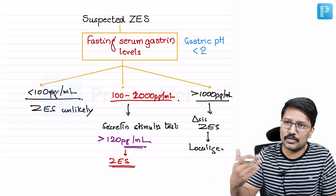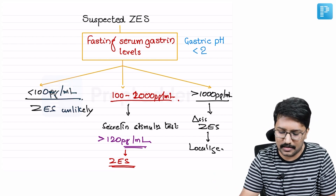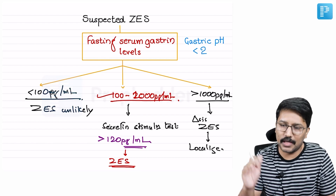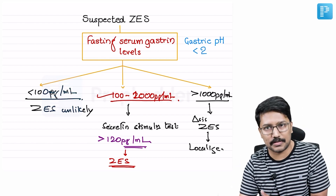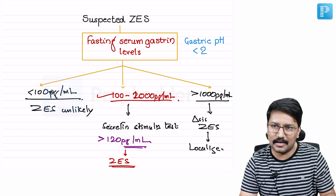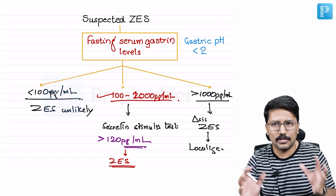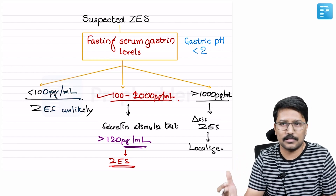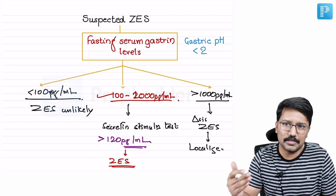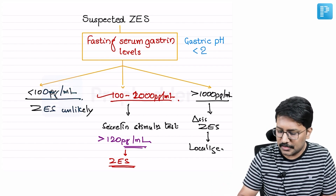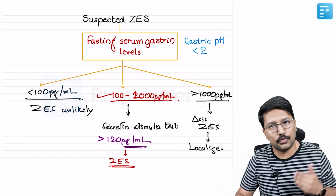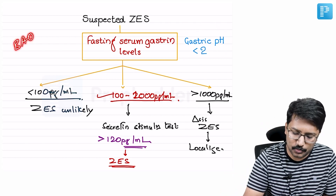Remember, whenever you have strong suspicion because of other features — for example, someone presenting with diarrhea, refractory peptic ulcers, or a known MEN 1 patient — and the suspicion is quite strong, but the gastrin levels and further steps are not fitting the picture, you still have to go ahead and assess basal acid output and the BAO to MAO ratio.